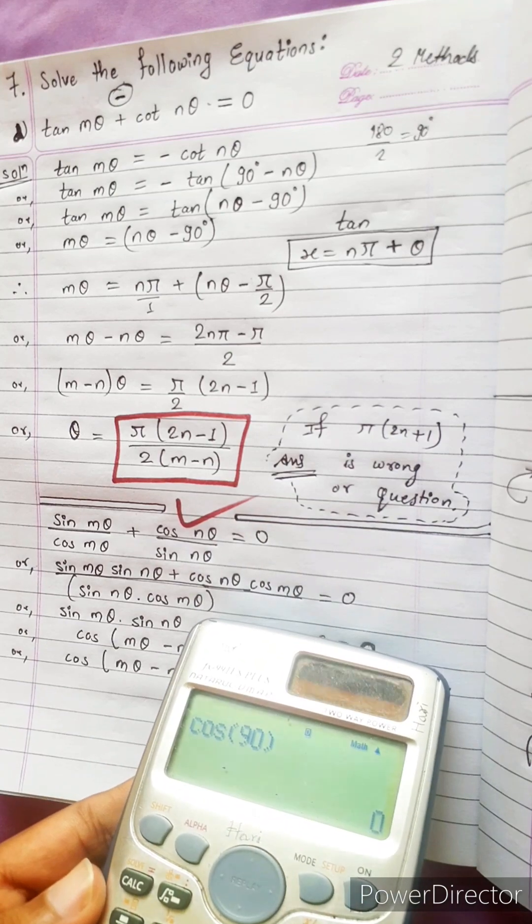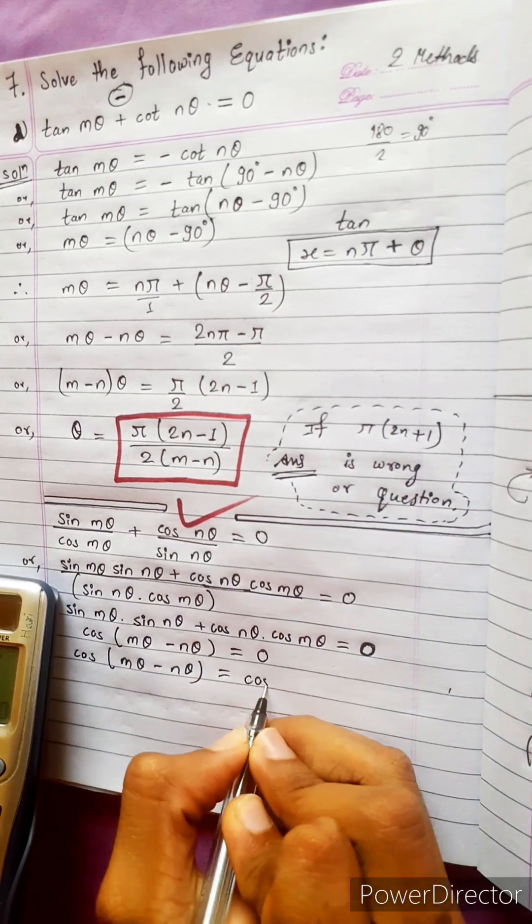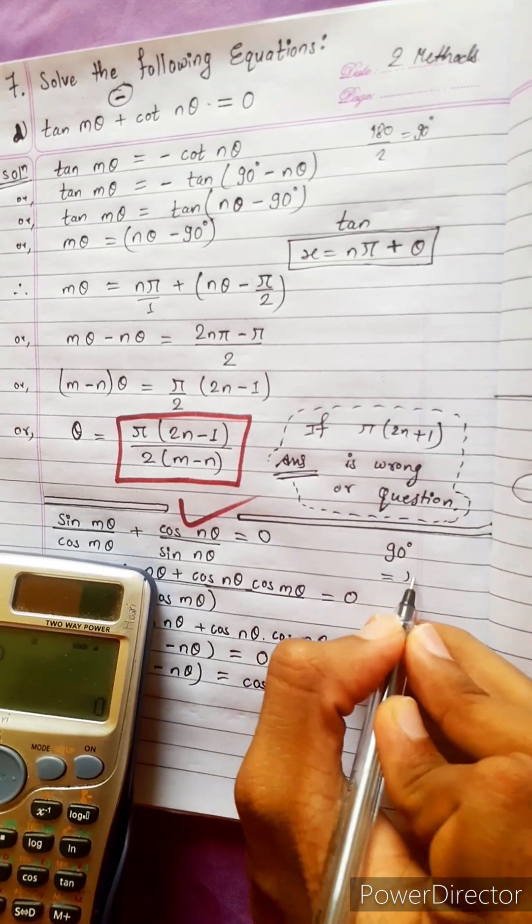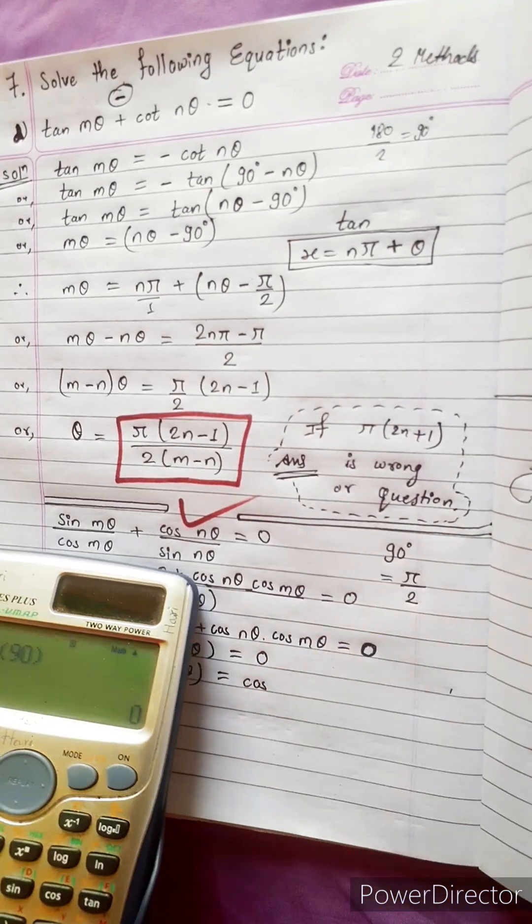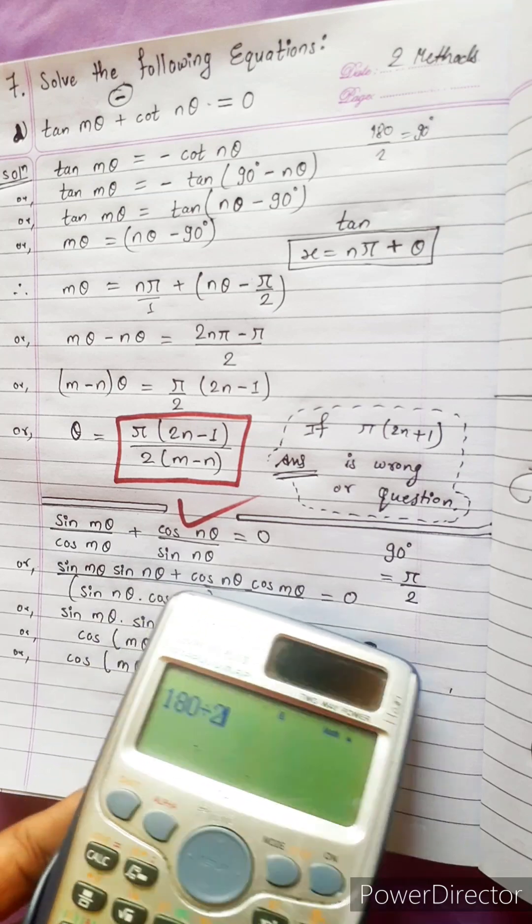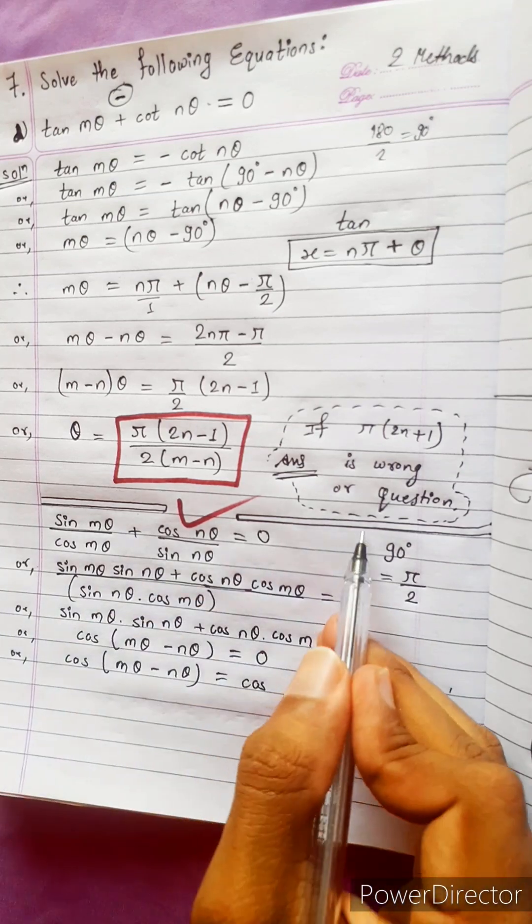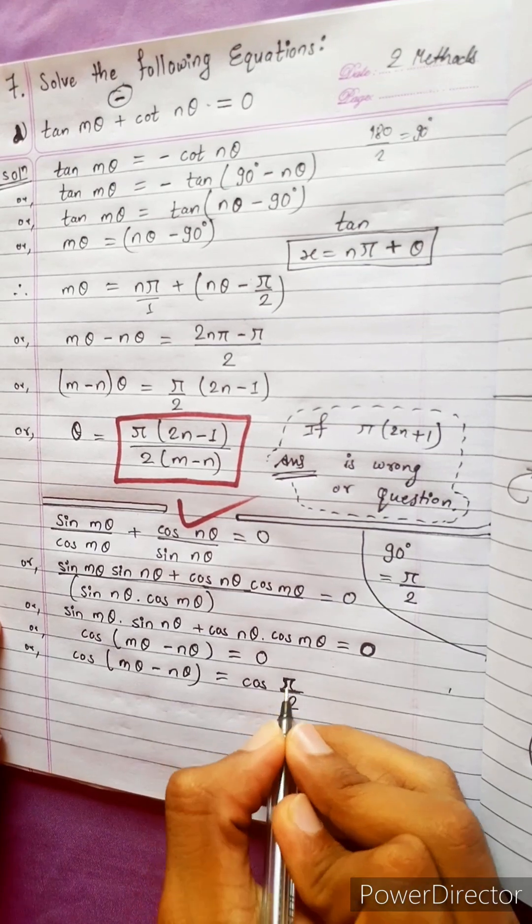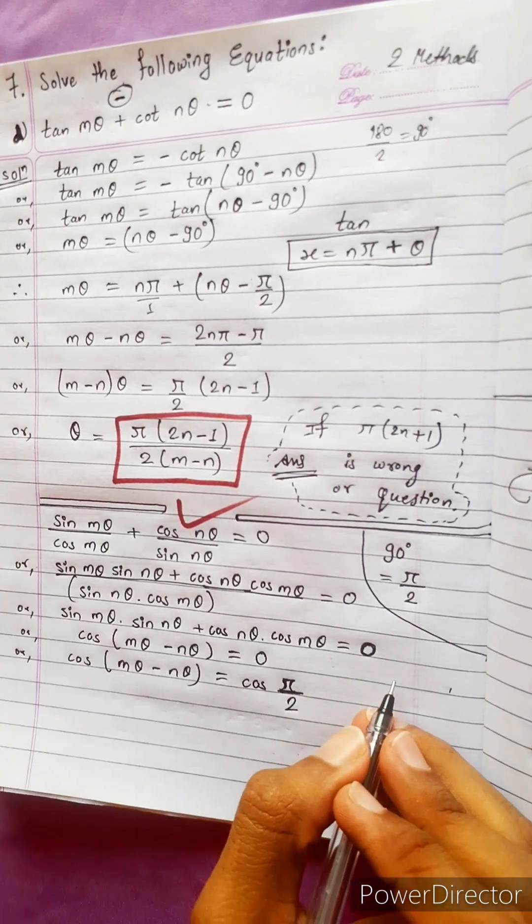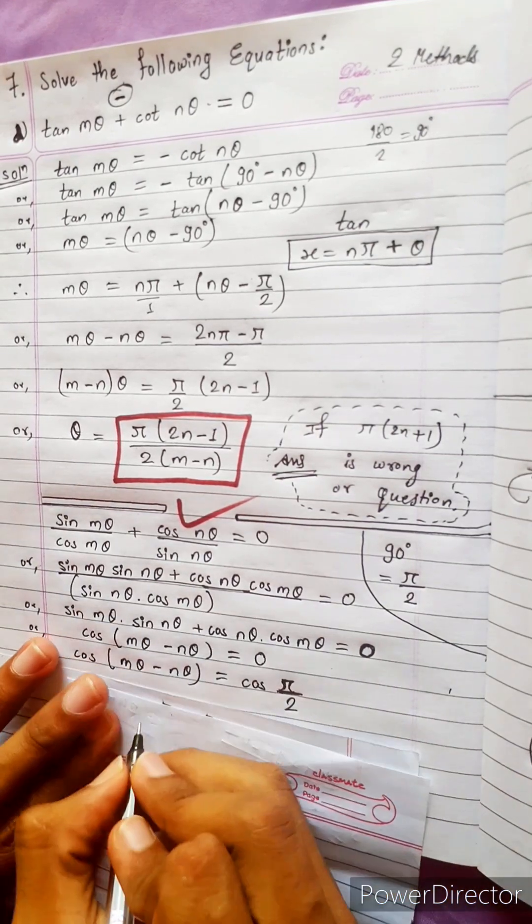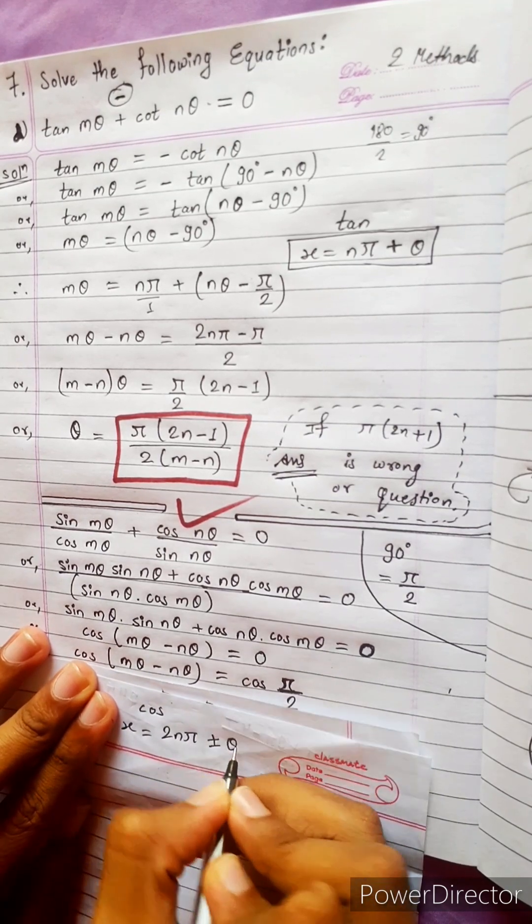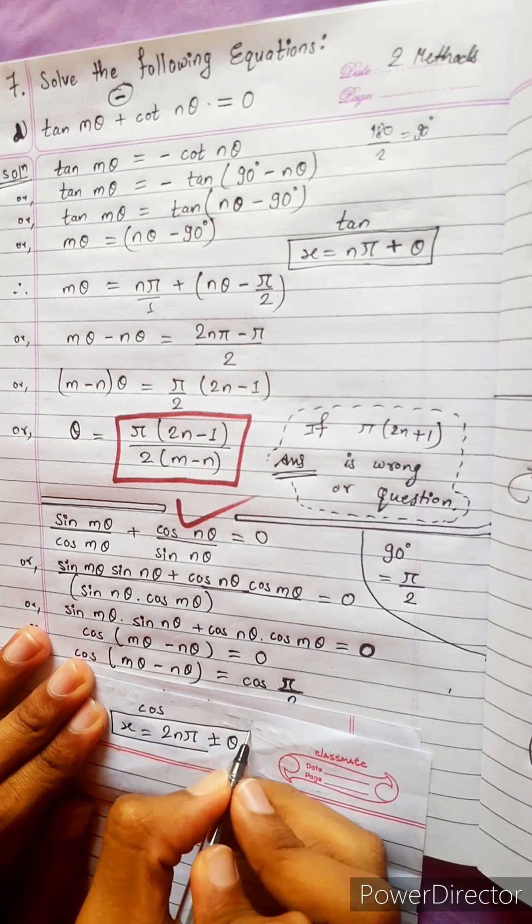Cos 90 is zero so write here cos 90. But 90 like this you will not write, it will not be so much standard. Write it as pi by 2, 180 by 2 is 90, so write it pi by 2. Now listen very carefully, in this general solution formula of cos is x equals to 2n pi plus minus theta. This is formula and you know this very well.